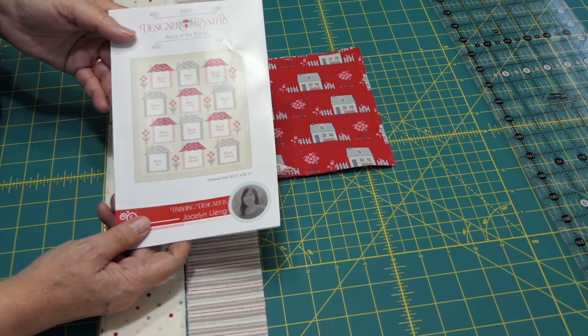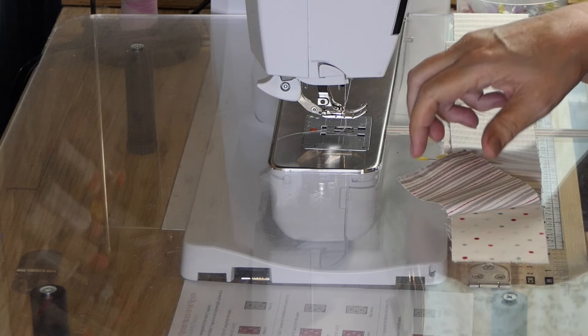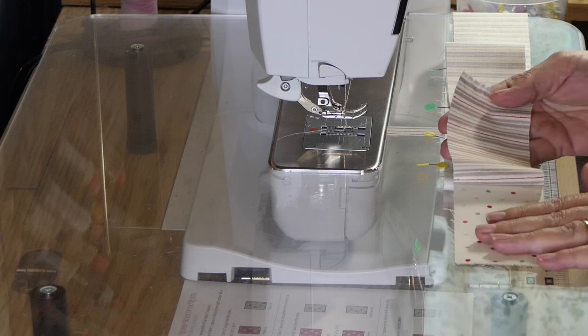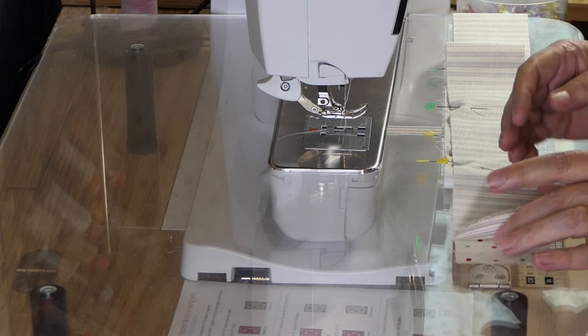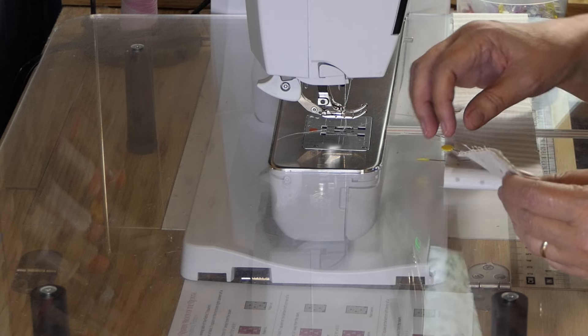So let's get over to the sewing machine and get started. All right, the first thing we're going to do is we're going to take this stripe and the background, put it face together and sew it along one edge.